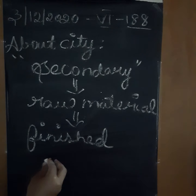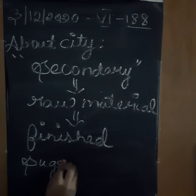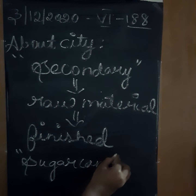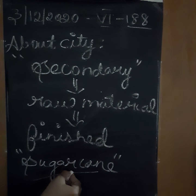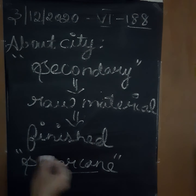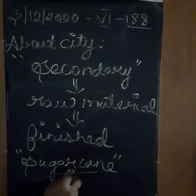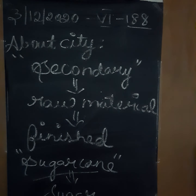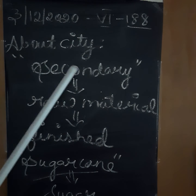For example, we take sugarcane. Sugarcane is the primary activity because it is cultivated by the village people. For our daily necessary purpose, we convert it into sugar using machinery. So here, the raw material sugarcane is converted into the finished product sugar. It is called secondary activities.